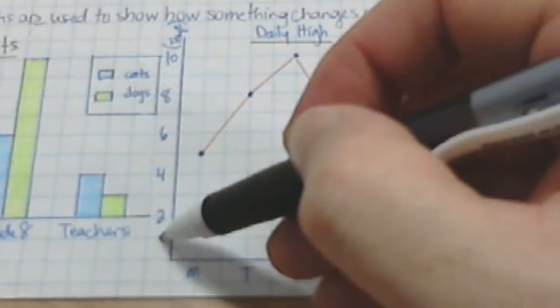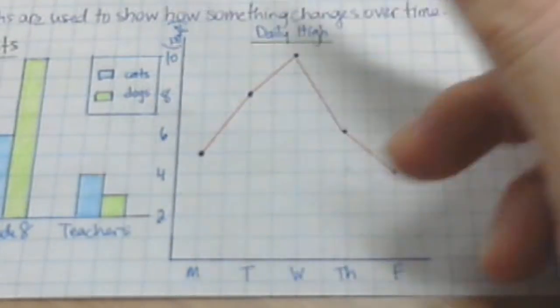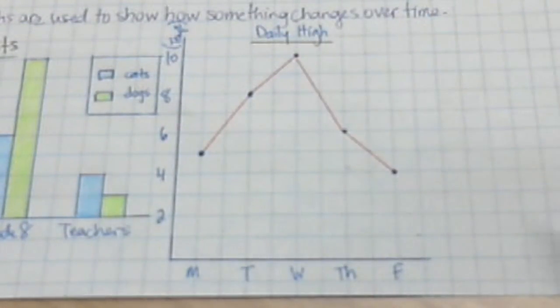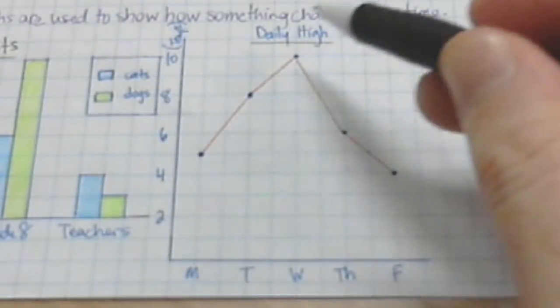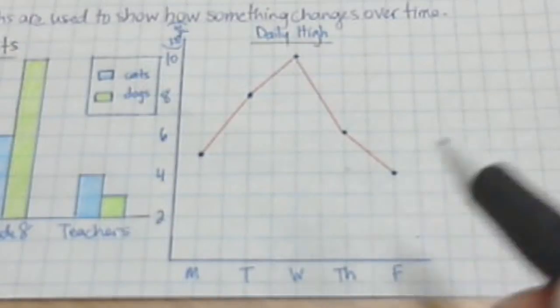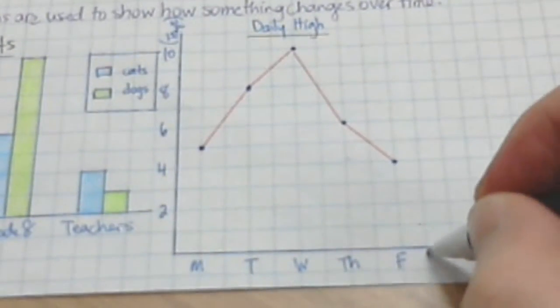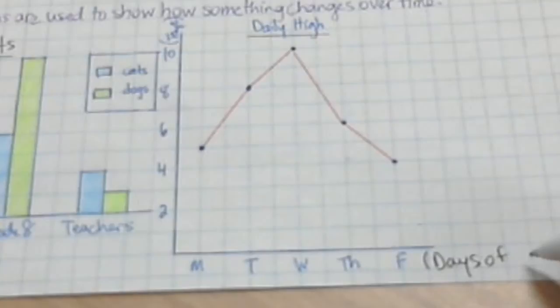And the interval just go by 1, 2, 3, 4, 5, 6, 7, 8. And this is just the daily high temperature, probably in March or April. And it shows how the daily high changes over the course of five days. And so again, I could have a title down here called Days of the Week.